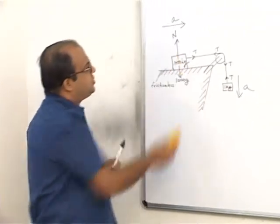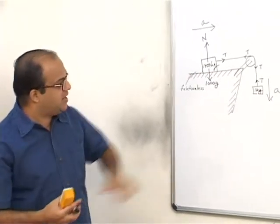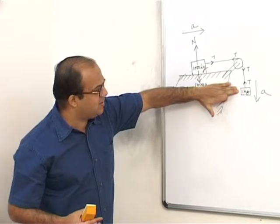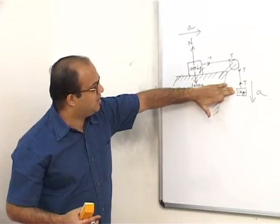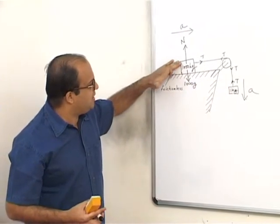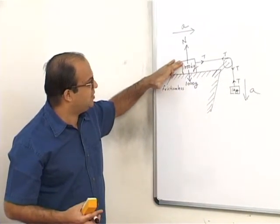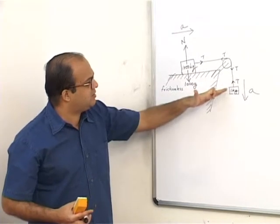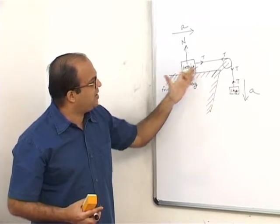This example is meant to show that even if one mass is very small and the other is very large, the small mass can still cause the large mass to accelerate.